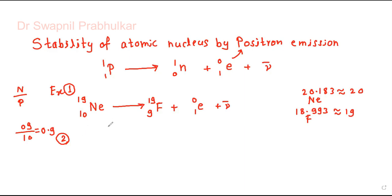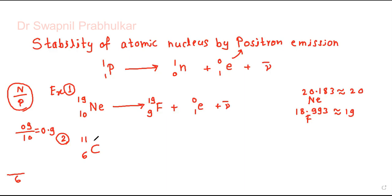Let us see one more example. If you have carbon with atomic number 6, which has an atomic mass of 11 — what will be the N/P ratio? The number of protons is 6 and the total nucleons is 11, so the number of neutrons is 11 minus 6 = 5. So the N/P ratio is 5/6 = 0.833. This value is also lower than 1, so this radioactive carbon-11 is unstable.